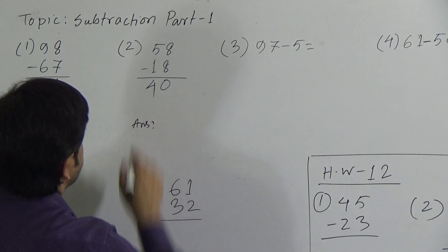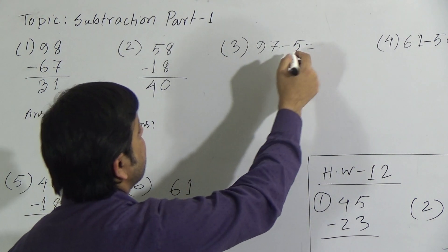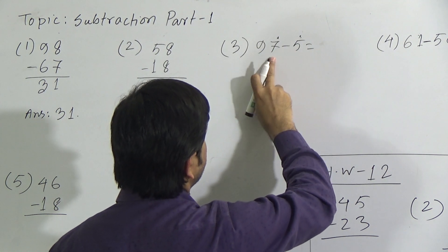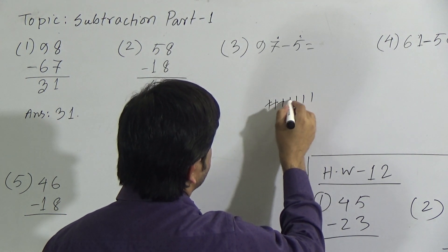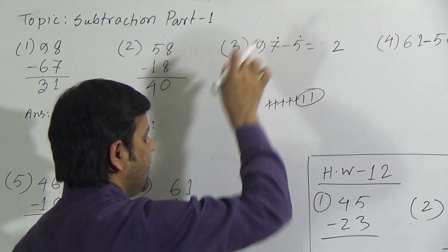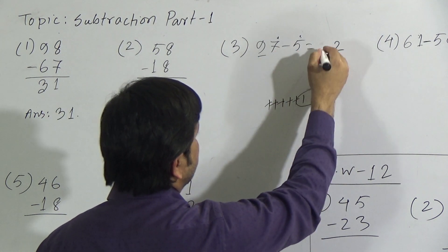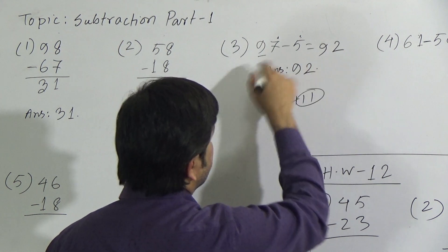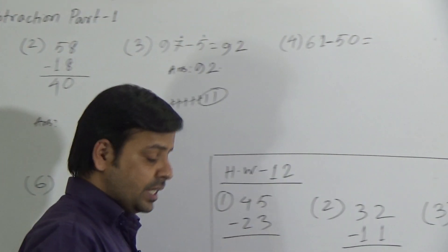Now the third question: 97 minus 5. We subtract in the unit place: subtract 5 from 7. Count 7 sticks: 1, 2, 3, 4, 5, 6, 7. Take away 5: 1, 2, 3, 4, 5. Two sticks remain, so we write 2. There is no digit in the tens place of 5, so the tens place stays as 9. The answer to question 3 is 92.